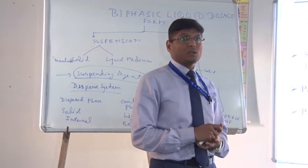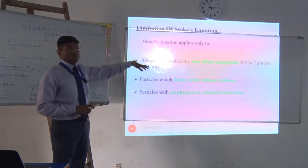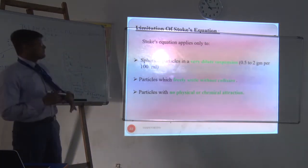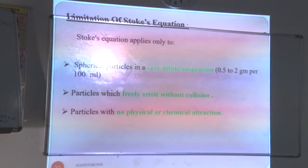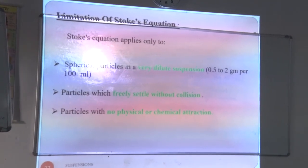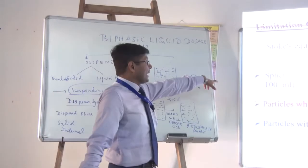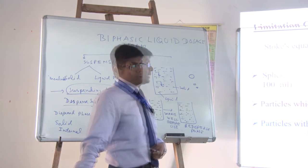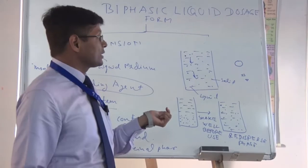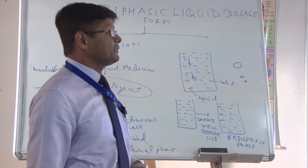There are some limitations of the Stokes' equation. First, it applies only to spherical particles in a very dilute suspension. Not all particles are spherical — particle shapes can be different. Second, it applies to dilute suspension (approximately 0.5 to 2 grams per 100 mL). The law applies under the condition that particles settle freely without collision — particles should settle independently without interacting with each other, which is practically not always possible.